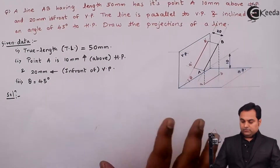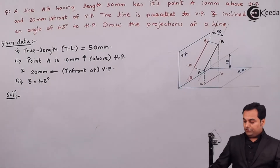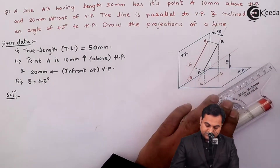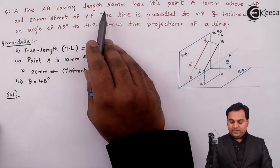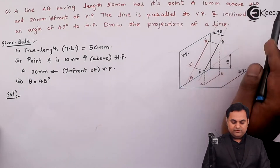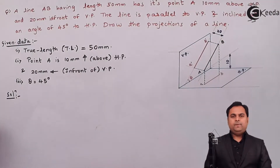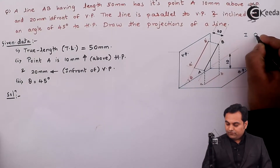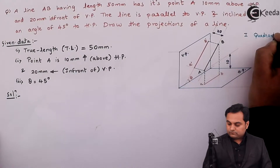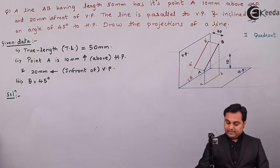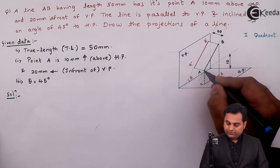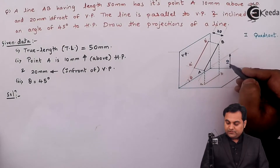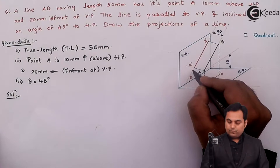Here I have drawn the question in 3D form so that we can understand how the line is inclined and what conditions are given. Line AB having length 50 mm has its point A 10 mm above HP and 20 mm in front of VP. Since it is 10 mm above HP and 20 mm in front of VP, the line is in the first quadrant. Here I have denoted point A — this is the actual line AB with point A 10 mm above HP.